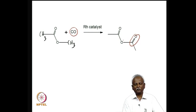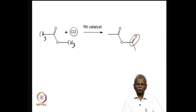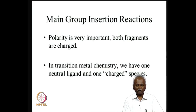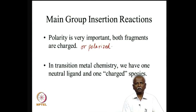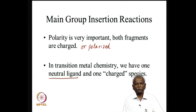In main group insertion reactions, polarity is very important — both fragments have to be charged or polarized. In transition metal chemistry, however, a neutral ligand can undergo an insertion reaction. So neutral species can be added using organotransition metal chemistry, whereas polar compounds can be added using main group organometallic chemistry. It is very important for us to understand such insertion reactions where there is hardly any polarity change bringing about the transformation.